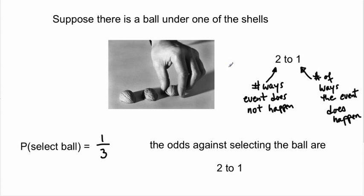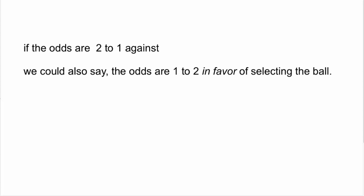Two to one odds means two is the number of ways the event doesn't happen and one is the number of ways the event does happen. So these are the odds against selecting the ball. It also means that if you bet one dollar and you were right, you would win two dollars back in addition to your one dollar.